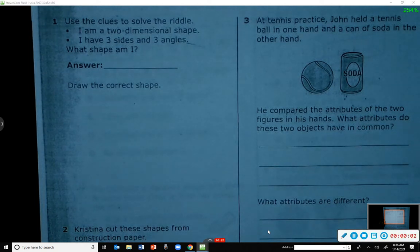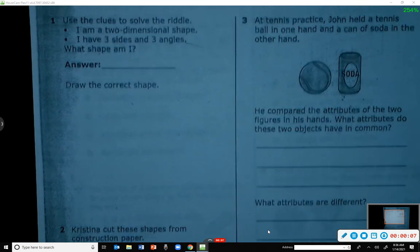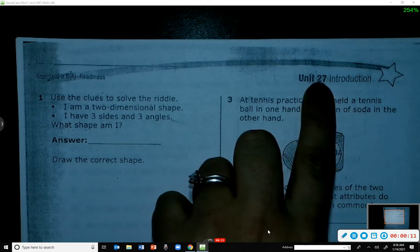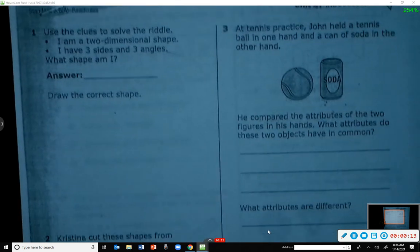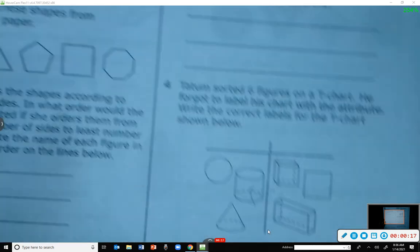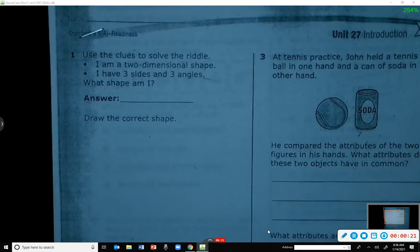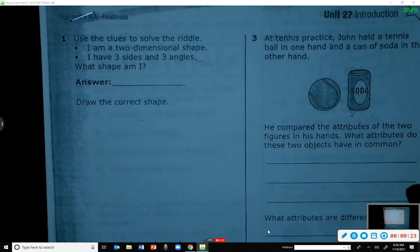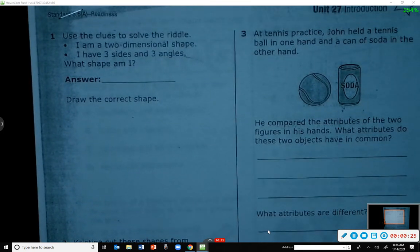Okay boys and girls at home, we are doing our math lesson. Today we're going over the pages that were posted that look like this - it says Unit 27 up at the top. We're going to do pages 215 and 216 together. Number one says use the clues to solve the riddle: I am a two-dimensional shape, I have three sides and three angles, what shape am I?